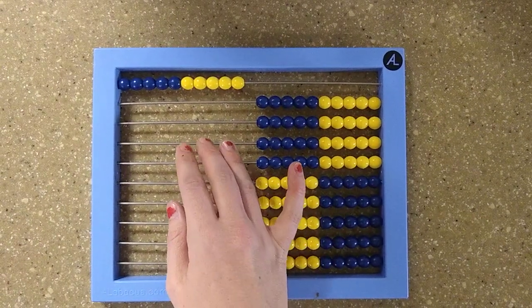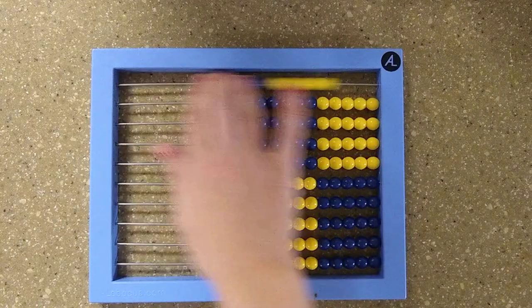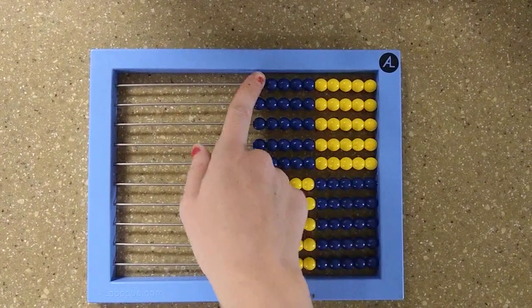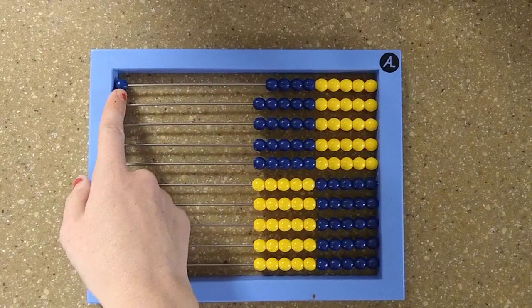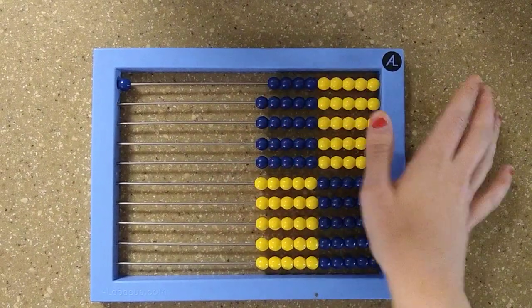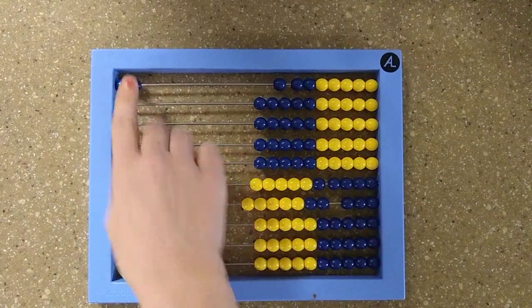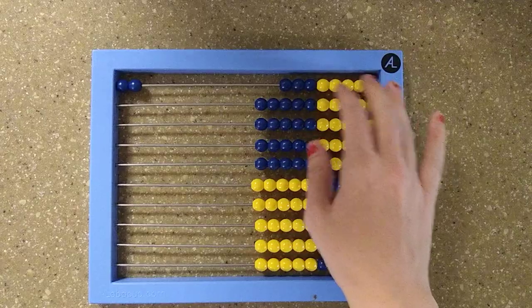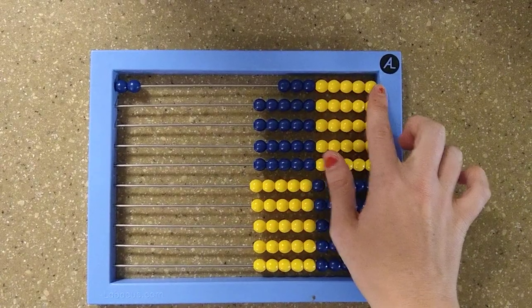And then the next thing you're going to want to teach them is pairs to ten. So if you have one, that means there's nine on this side, and that makes ten because there's ten beads on the line. If I have two over here, then I want them to memorize that I know I have eight over here. And then you can check that because you can see all the yellow beads, we know that's five.